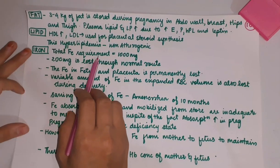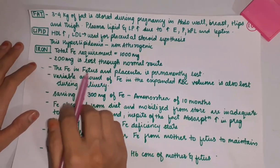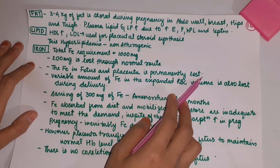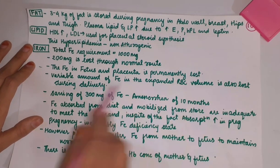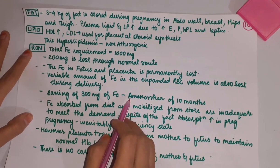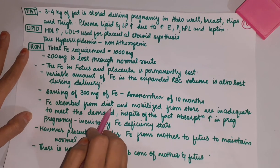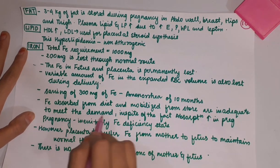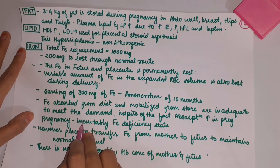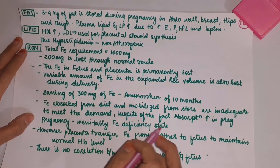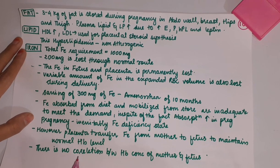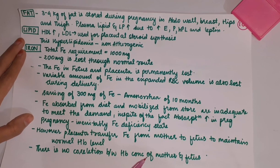Iron: total iron requirement is 1000 mg during the whole pregnancy. 200 mg is lost through normal losses. Iron in the fetus and placenta is permanently lost. A variable amount of iron in the expanded RBC volume is also lost during delivery. About 300 mg of iron is saved due to amenorrhea of 10 months. Iron absorbed from diet and mobilized from stores are inadequate to meet demand despite increased absorption in pregnancy, inevitably leading to an iron deficiency state. However, placental transfer of iron from mother to fetus is maintained, and there is no correlation between hemoglobin concentration of the mother and fetus.